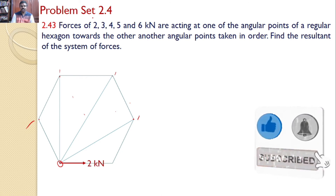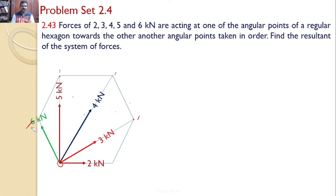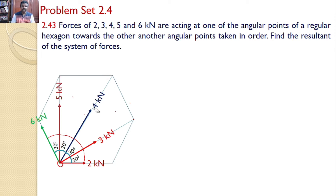The first force is 2 kilonewtons, taken in order. The second force starting from this point towards the next angular point is 3 kilonewtons. Next force is 4 kilonewtons, then 5 kilonewtons, and the last force is 6 kilonewtons. Since it is a regular hexagon, the angle between two adjacent sides is 120 degrees, with each sub-angle being 30 degrees, so these two become 120, these two become 120, and so on.